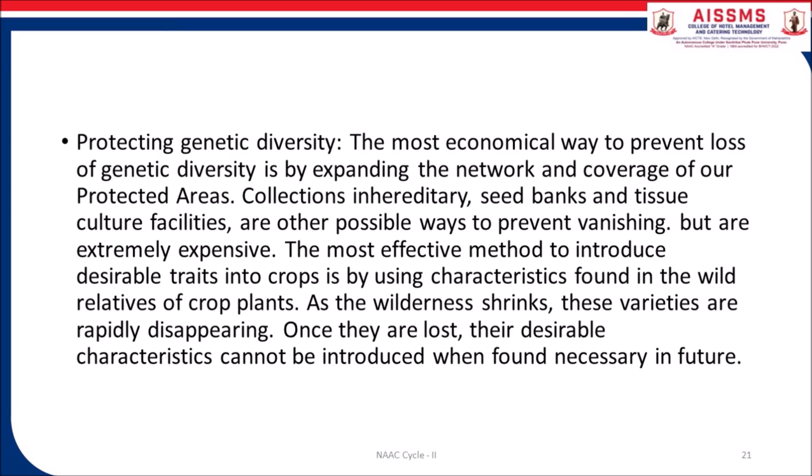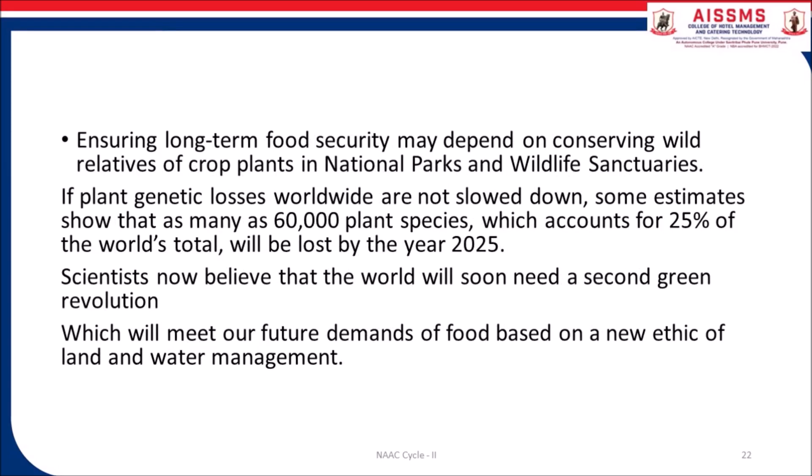Protecting genetic diversity — the most economical way to prevent loss of genetic diversity is by expanding the network and coverage of our protected areas. Collections in gene banks, seed banks and tissue culture facilities are other possible ways to prevent vanishing, but are extremely expensive. The most effective method to introduce desirable traits into crops is by using characteristics found in the wild relatives of crop plants. These varieties are rapidly disappearing, and once lost, their desirable characters cannot be introduced when found necessary in future. Ensuring long-term food security may depend on conserving wild relatives of crop plants in national parks and wildlife sanctuaries.